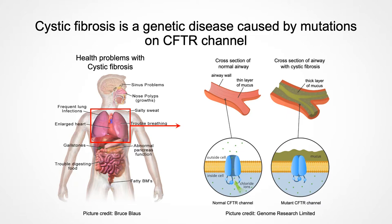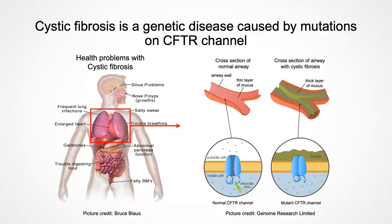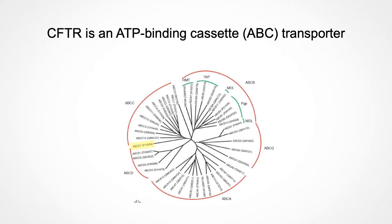Mutations on CFTR cause it either not to express or not to function properly on the lung epithelia. Therefore, in cystic fibrosis patients, the driving force for fluid secretion is gone, which interferes with their respiration and allows a thick layer of mucus to accumulate. This is a nice environment for bacteria and viruses to stay and cause infections, so it is a very miserable life that they have to experience. What we want to do is to look at the protein at its atomic level to see what we can learn from it and hopefully provide a template for future drug design towards cystic fibrosis.